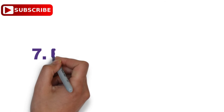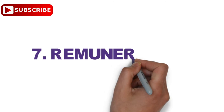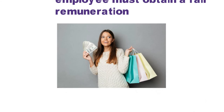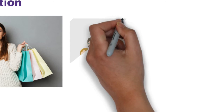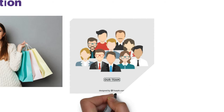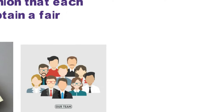Number seven: Remuneration. The salary or wages employees earn for their work help them to satisfy basic needs and other necessities of life. Fayol is of the opinion that each employee must obtain fair remuneration so that both the employee and the owner have the same amount of satisfaction. For example, as per the Chief Labour Commissioner Central, the minimum wage rate in India including basic wage and DA allowances is ₹383 for unskilled workers, ₹420 for semi-skilled workers, and ₹504 for highly skilled workers per day.